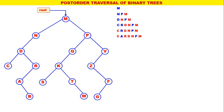Now the leftmost is A. The post-order for A is B, A — with A processed. Therefore, A is replaced by B, A with A processed. Now the leftmost is B. The post-order for B is B only, with B processed.